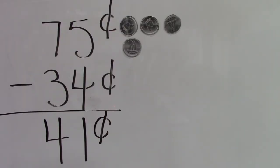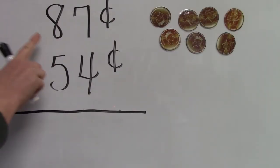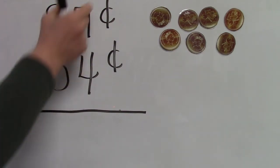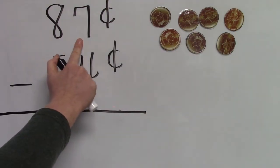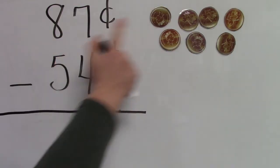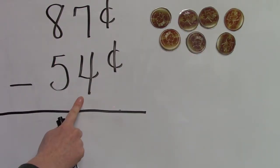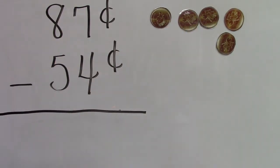Well let's look at the next question. Let's look at 87 cents take away 54 cents. You'll notice that I've lined up the ones place and the tens place when I wrote this vertically. Our seven tells us that we have seven cents and we're going to take away four. One, two, three, and four. How many pennies do we have left? That's right, we have three pennies left.